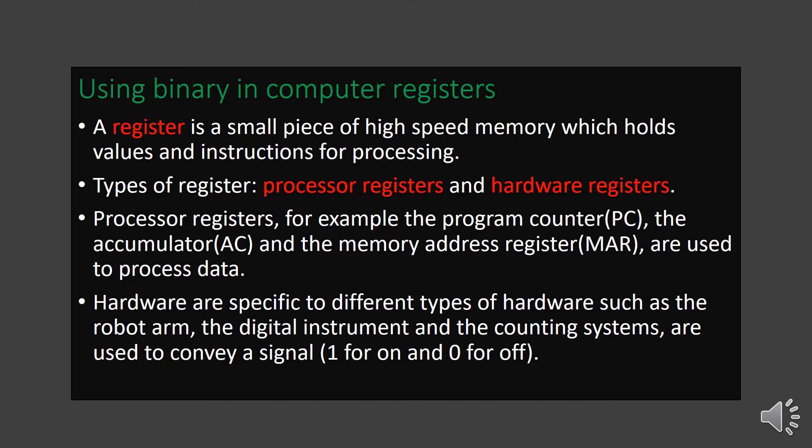Registers. Just as a library records your information in a register book, in a computer, registers are used to store small pieces of information. The processor processes all instructions and data. That information must be stored where it can be easily and quickly accessed by the processor for high-speed processing. That is why we use registers — a register is a small piece of high-speed memory which holds values and instructions for processing.